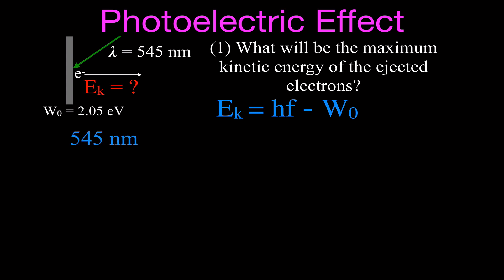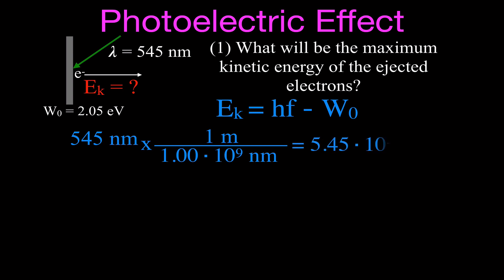The first thing we need to do is figure out the energy in the light. We're going to convert 545 nanometers — first into meters, then into joules, then into electron volts. To convert to meters, we know that one meter equals 1.0×10⁹ nanometers, so 545 nanometers gives us 5.45×10⁻⁷ meters.